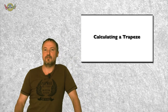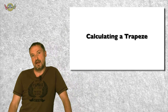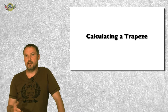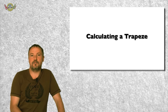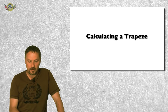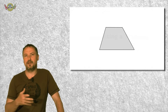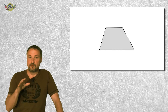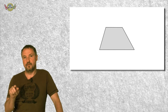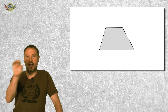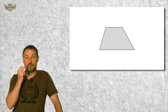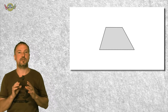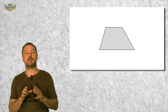So we want to talk about calculating a trapezoid. What is a trapezoid? It's not a rectangle, it's not a triangle — it's something in between. You can see a trapezoid has four sides, four edges, so there's nothing round inside of it. But the angle of each edge can be different.